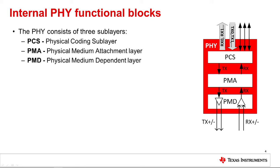In this case, hybrid and echo cancelling functions hosted in the PMA-PMD allow the PHY to successfully receive data over the link at the same time it is transmitting. Finally, the physical medium may consist of multiple parallel physical channels that enable transmission and reception of data at higher rates. For example, 1000BaseT uses four twisted pair channels, A, B, C, and D, each supporting 250 megabits per second to achieve a total data rate of 1 gigabit per second.